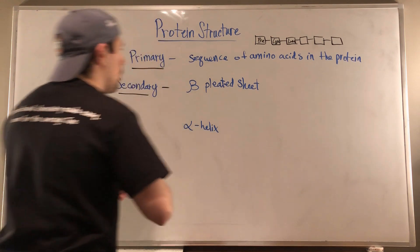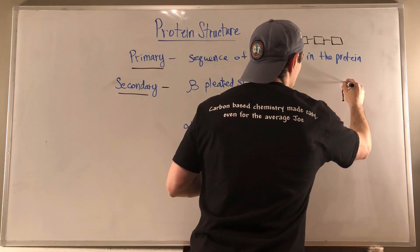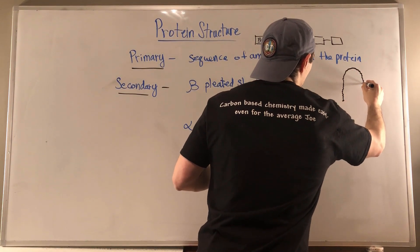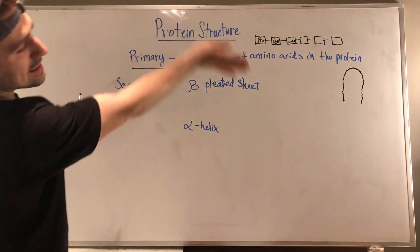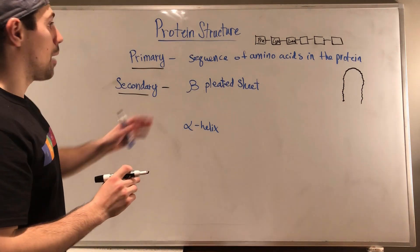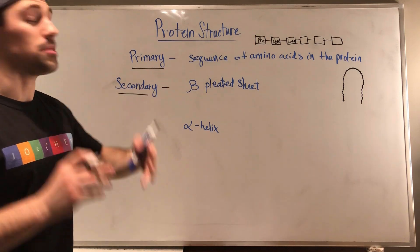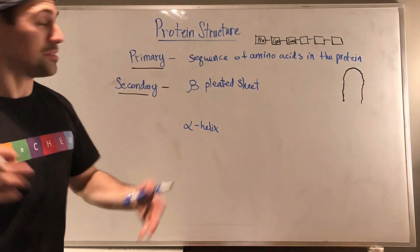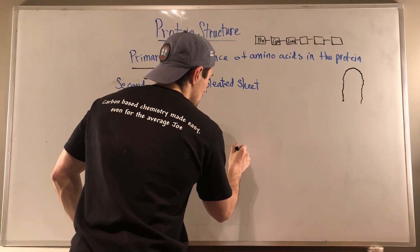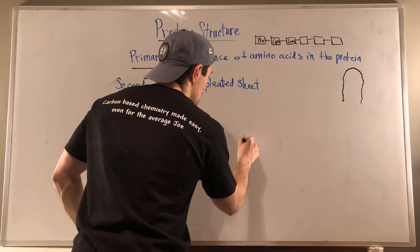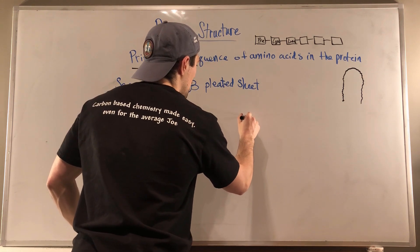So what does a beta pleated sheet look like? It kind of looks like this. It's not going to be a great artist rendition, but it's kind of like you have your amino acids in a row and you kind of just like, it's almost like you went on a roller coaster that went up and then down the other side. So alpha helixes, that's kind of when your chain is like a coil. It's just going to keep going like this. It's like a spiral going upwards.